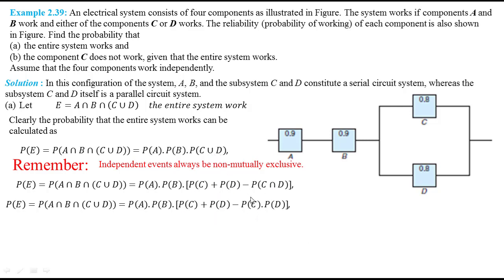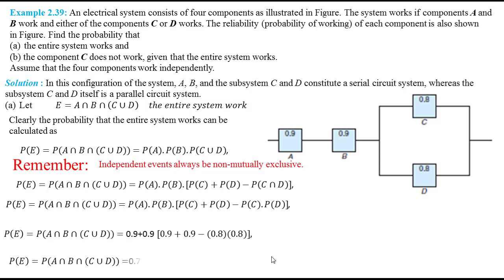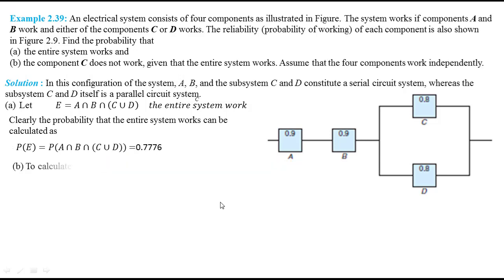Note that the probability of C intersection D can be written as probability of C multiplied by probability of D, because C and D are independent events. By applying the law of multiplication for independent events, and substituting the probabilities, we have the probability of working equal to 0.7776. In part B, the probability that component C doesn't work given that the entire system works can be written using the conditional probability formula.